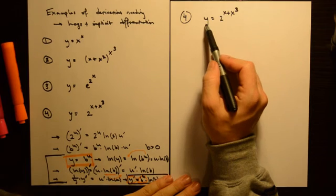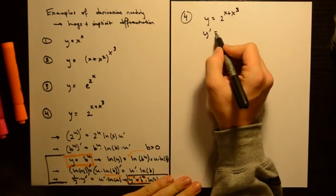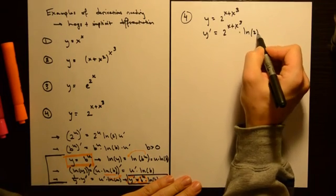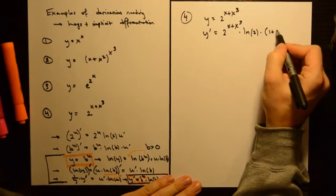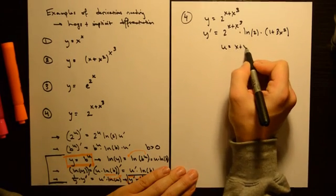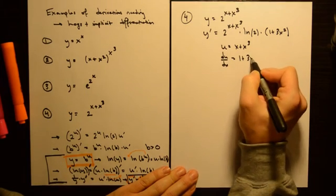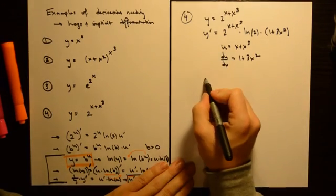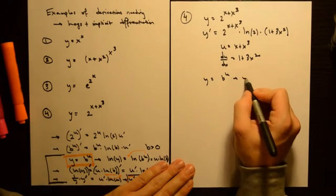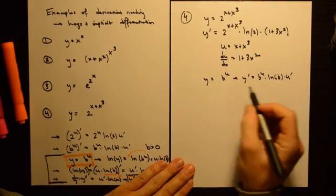In this final problem we differentiate y equals 2 to the (x plus x cubed). The answer can be written almost immediately as 2 to the (x plus x cubed) times the natural log of 2 times (1 plus 3x squared). This uses the substitution u equals x plus x cubed, so du/dx equals 1 plus 3x squared, and the rule y equals b to the u implies y prime equals b to the u times ln(b) times u prime.